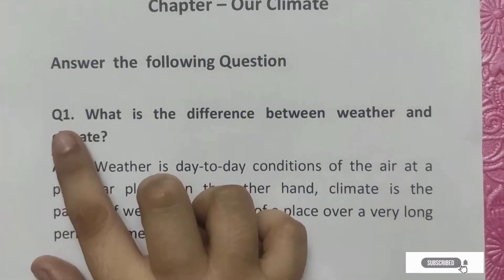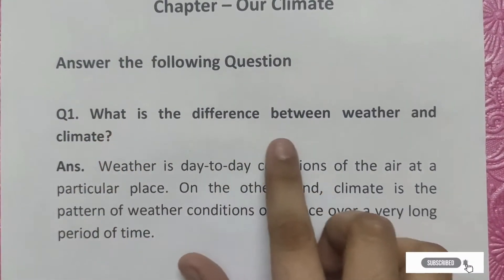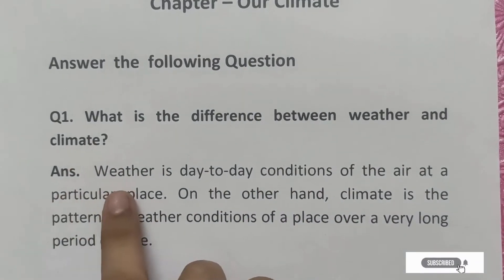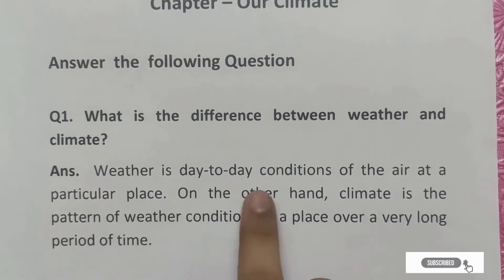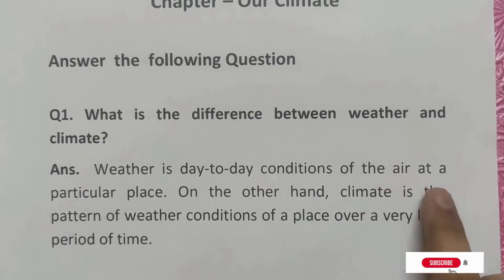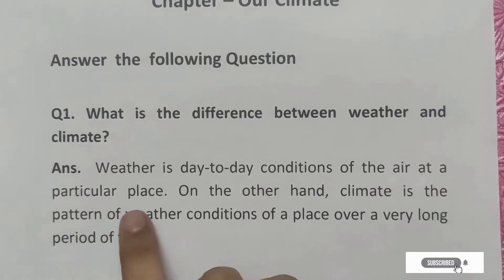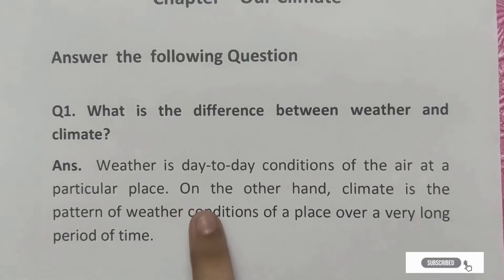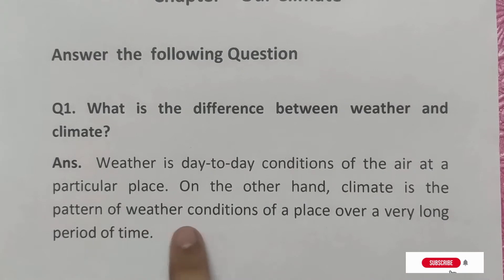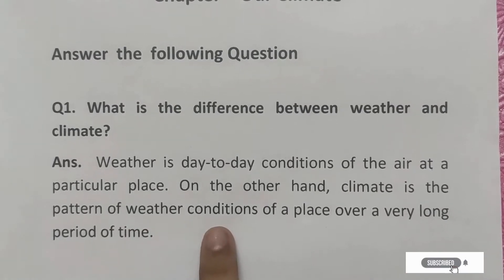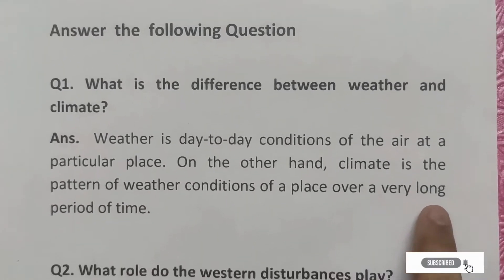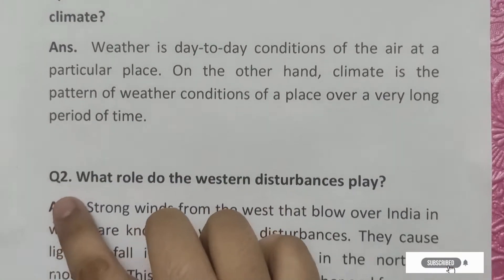Question number 1: What is the difference between weather and climate? Answer: Weather is the day-to-day conditions of the air at a particular place. On the other hand, climate is the pattern of weather conditions of a place over a very long period of time.